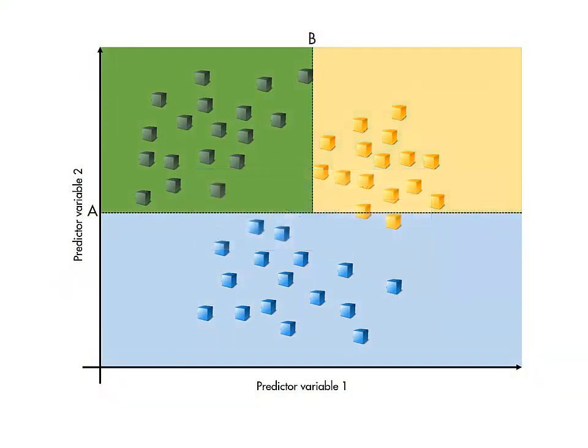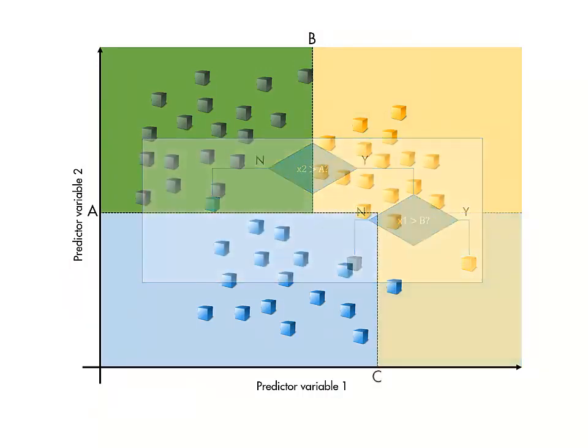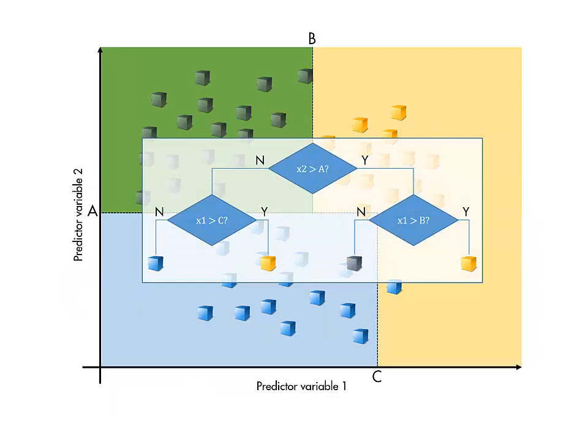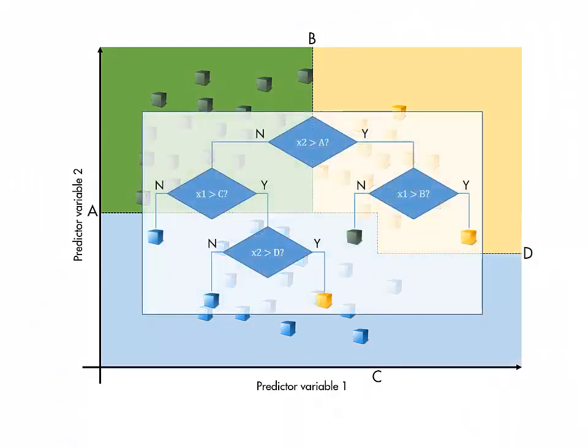Then the process repeats at the next level of the tree. This continues until all the branches terminate, which happens when no further splits on that branch can improve the criterion value.